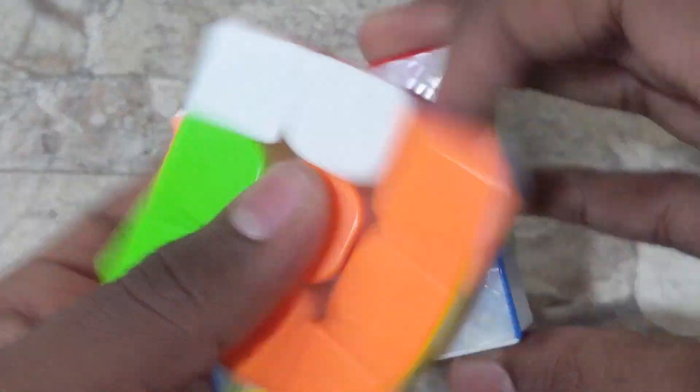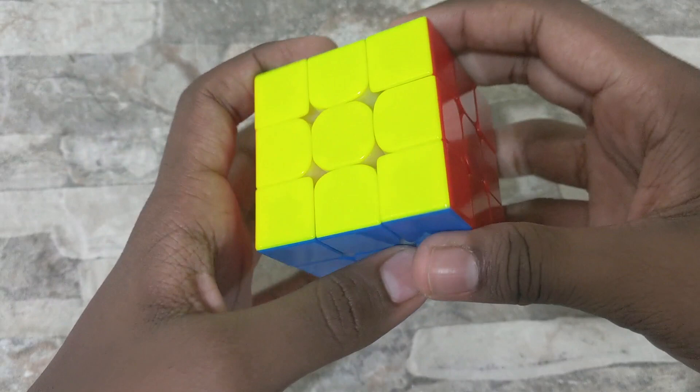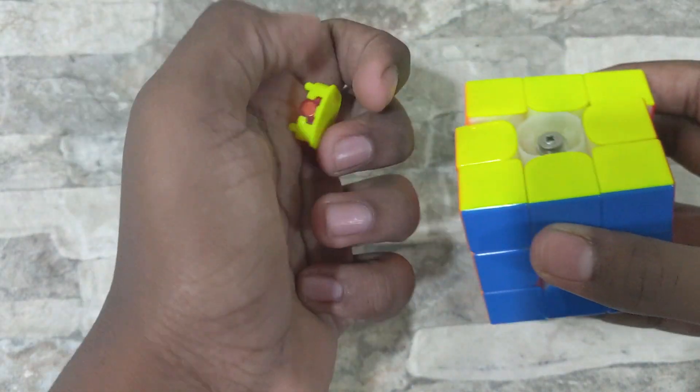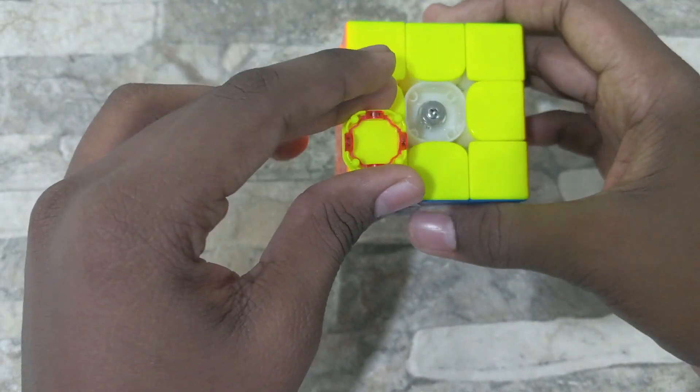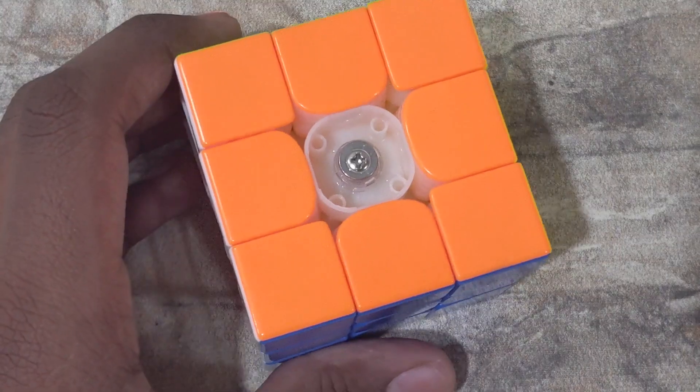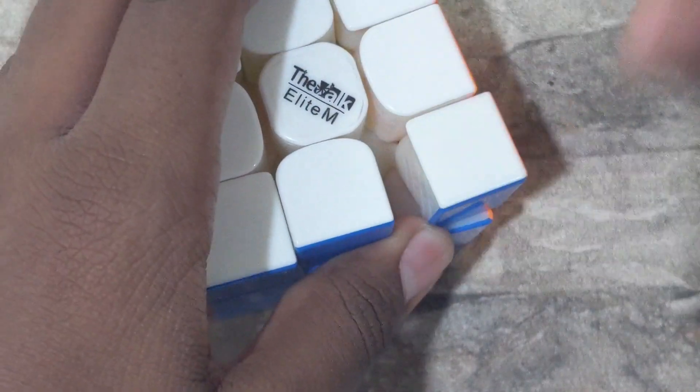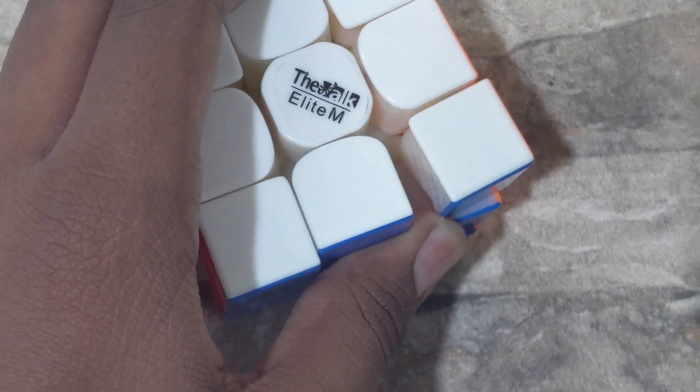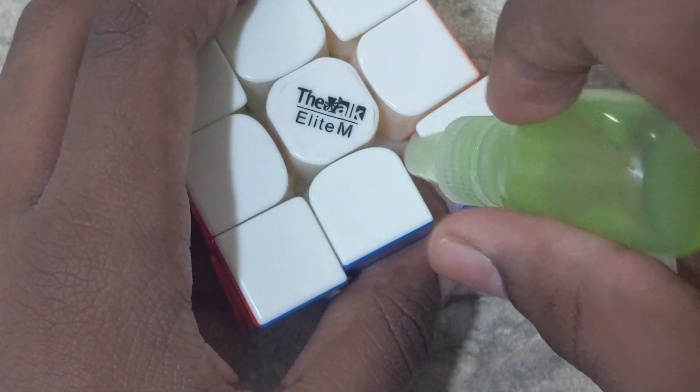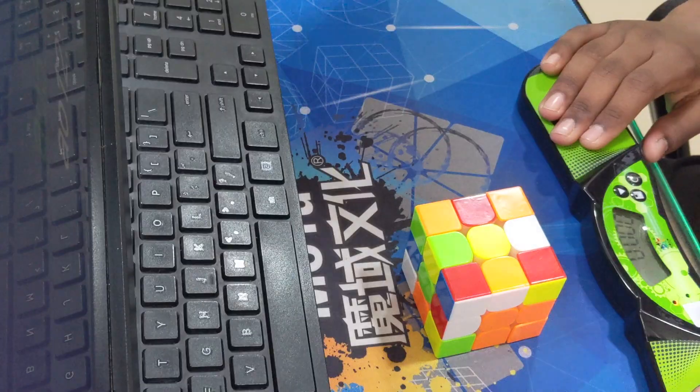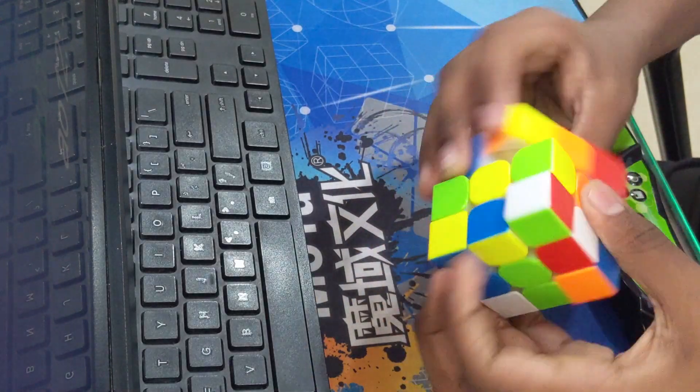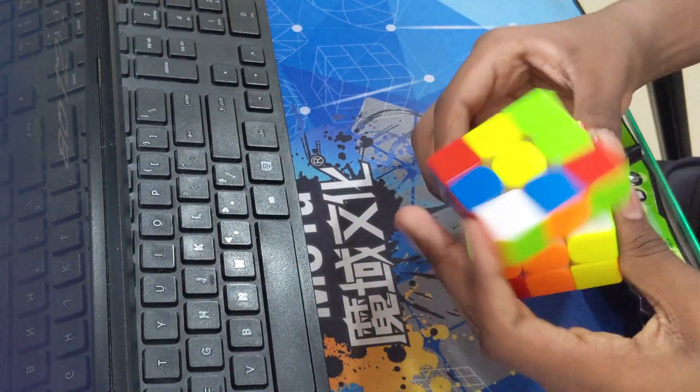As for me, I use the red magnets along with the clear springs. As for how I lubed it, I put Weight 5 on the core and I put Lubicle Silk and Velocity on the pieces. I will leave a link in the description on how to set up the Valk Elite M.